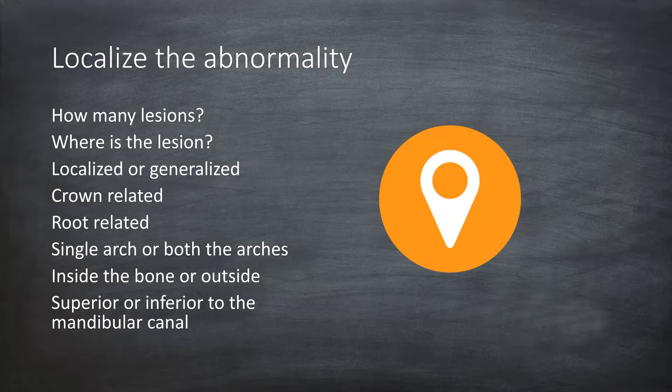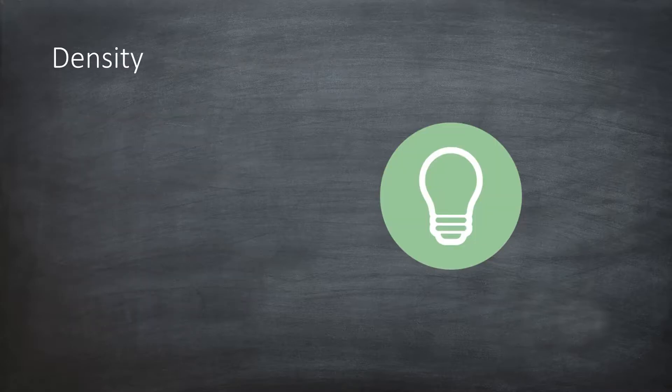Once you have described the location and the number of the lesions, let's go to the second radiographic feature. Now we will describe the density of the lesion. The lesion may be radiolucent, which is dark on a radiograph.